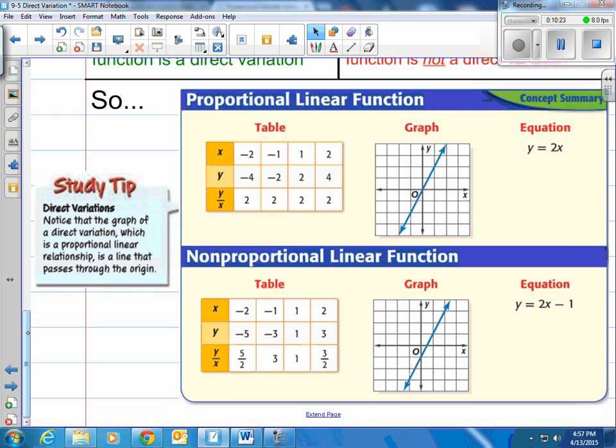So what are we saying here? We'll take a look at these two examples. The top one which is proportional linear functions, and then non-proportional linear functions. They're both linear. They're both lines. And that's what it says here in our study tab. It says notice that the graph of a direct variation, which is a proportional linear relationship, is a line that passes through the origin. Now notice the other one on the bottom here, which is non-proportional. It's still a line, but it doesn't pass through the origin.